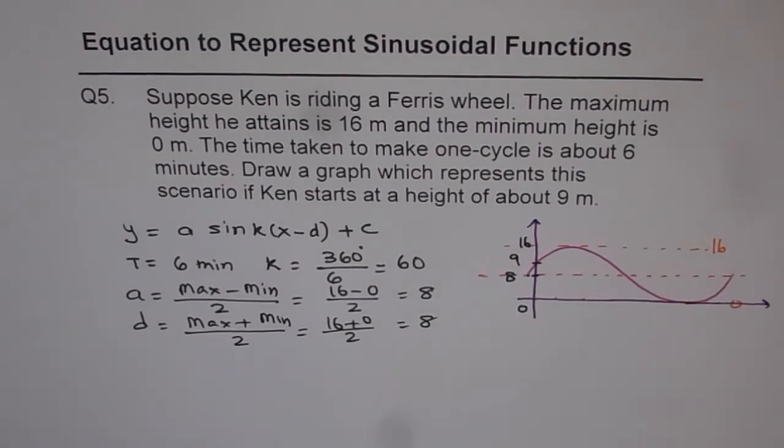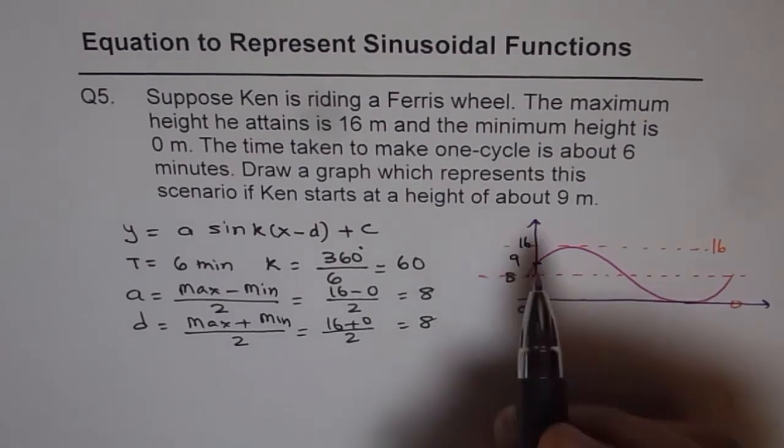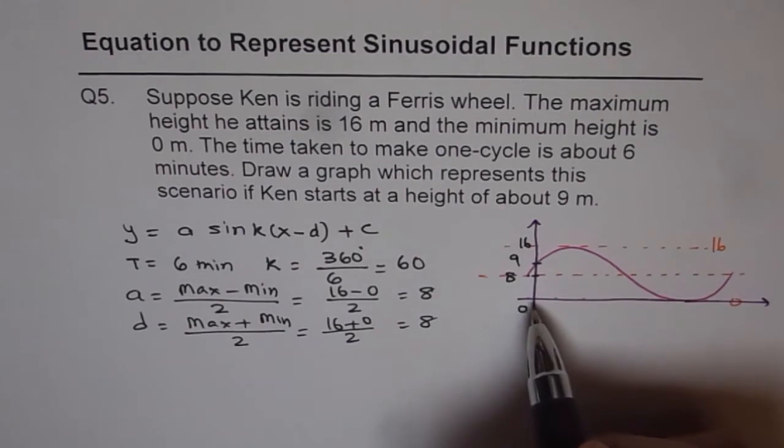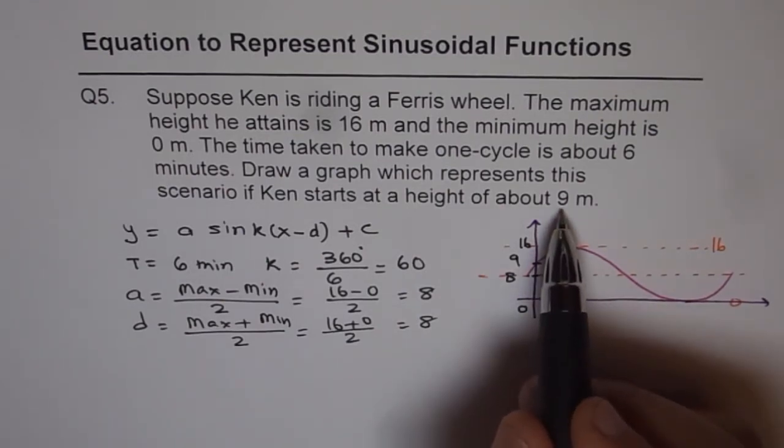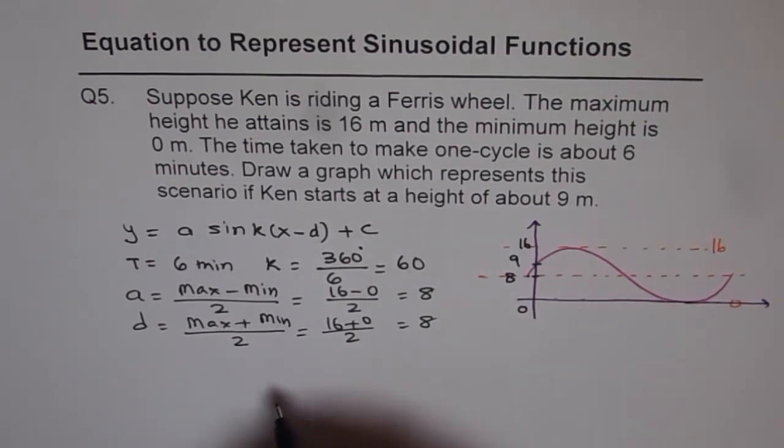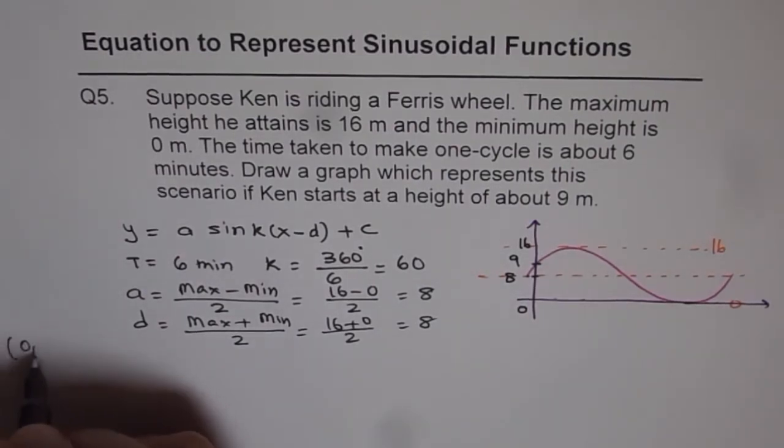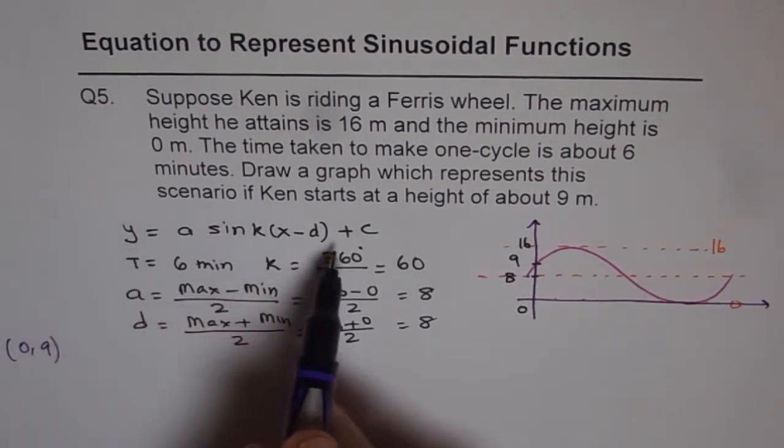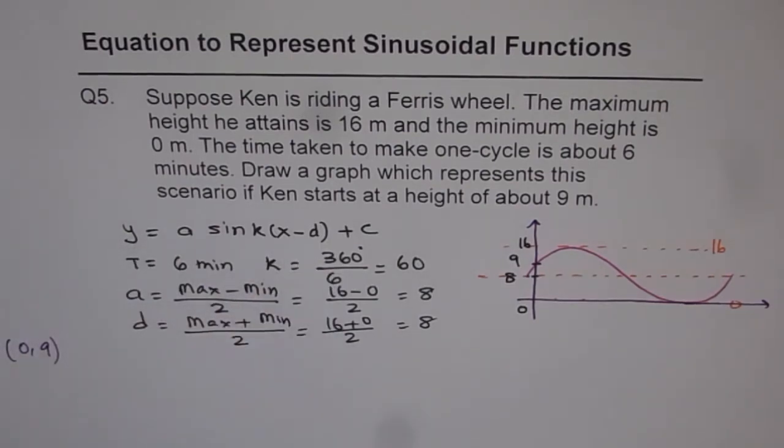Now how do we find d, the phase shift? That is always the most critical part. So let's figure that out. We'll find it from the initial conditions given to us. That at 0, height is 9 meters. So we are going to utilize the point which is 0, 9 in the given equation to find what d is.